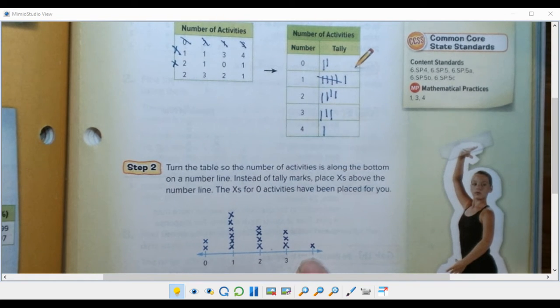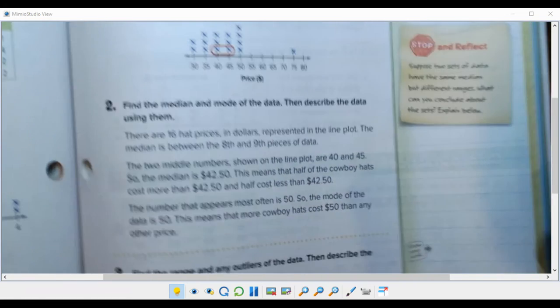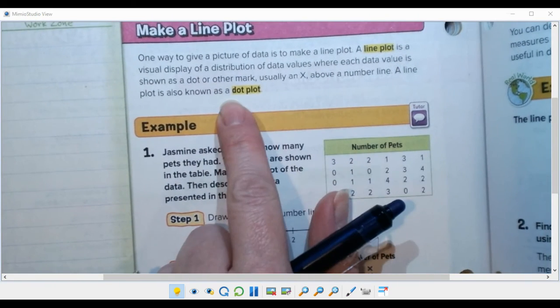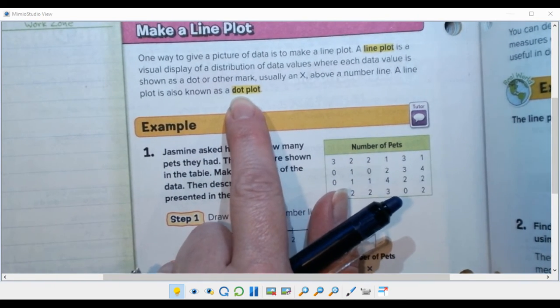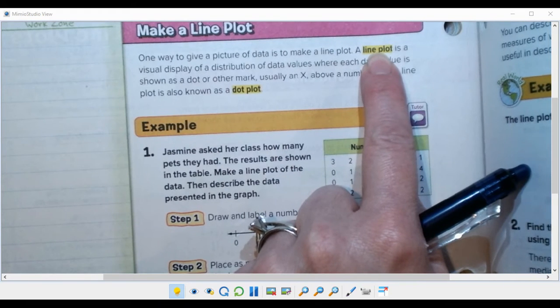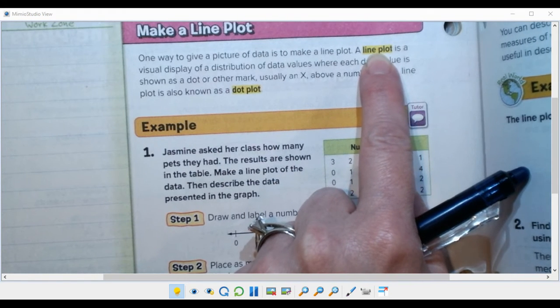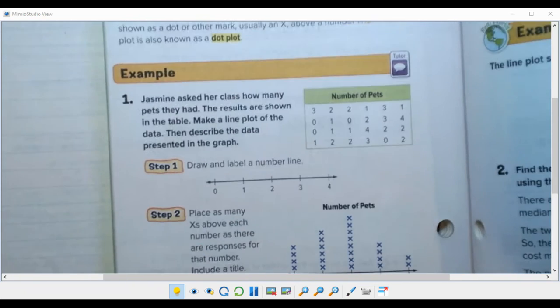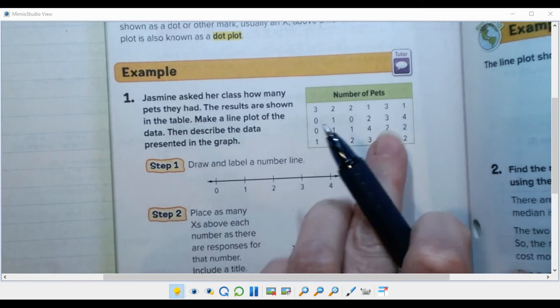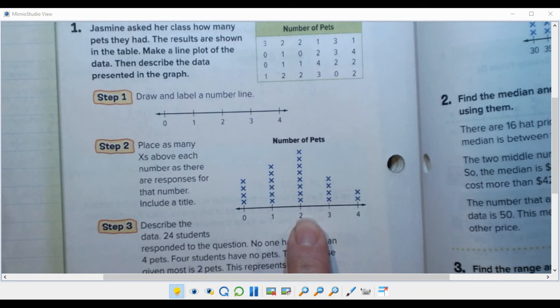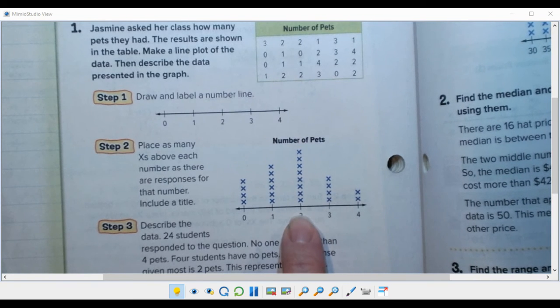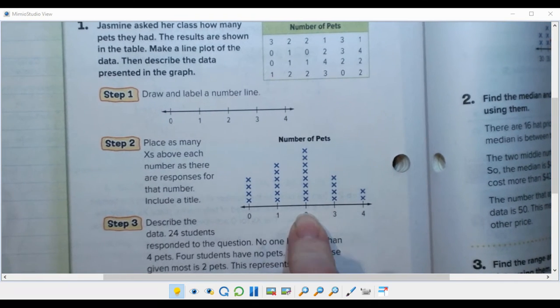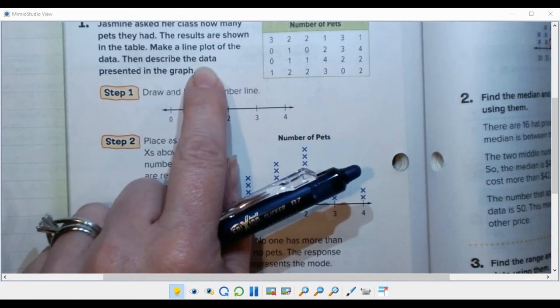Turning the page they give you a definition up at the top comparing line plot and dot plot. Dots usually have dots, line plots usually have x's. I don't know why they call the line plot when they use x's, I guess because they're made out of lines I don't know. So I'm actually going to skip making this, this information went on to this dot plot.